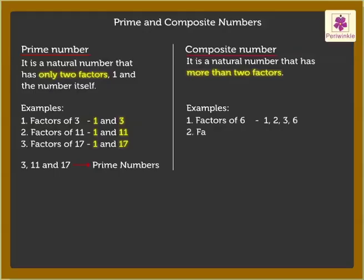The factors of 14 are 1, 2, 7, and 14. The factors of 20 are 1, 2, 5, 10, and 20.